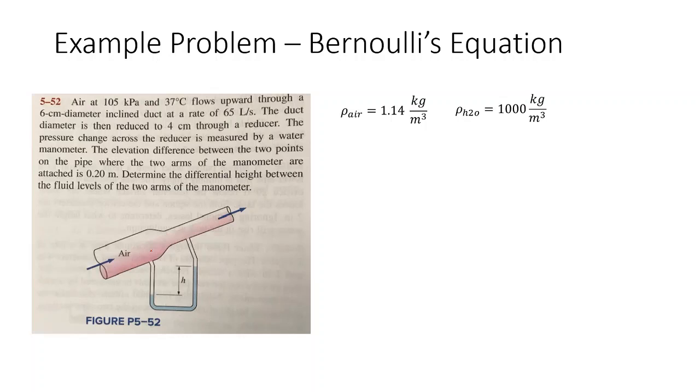Our next step is to use this volumetric flow rate to find the velocity of our fluid through each duct segment. So Q of air is 65 liters per second. We're going to want to convert this into meters. If we recall that there's a thousand liters per cubic meter, we can convert this to 0.065 cubic meters per second.